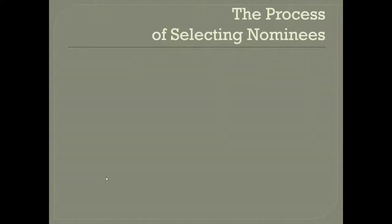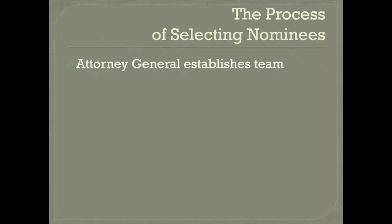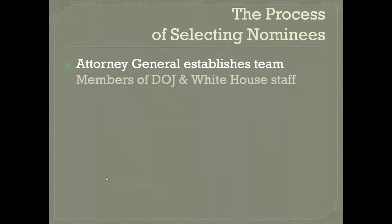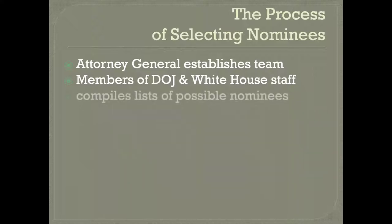We've already talked about the factors that a president considers when deciding who to nominate to the Supreme Court. Now let's consider the process that the executive branch follows before actually making a nomination. The process is typically led by the Attorney General, who establishes a team comprised of members of the Department of Justice and the White House staff. Members of the Department of Justice are there to provide legal advice, and members of the White House staff are there to provide a political perspective. Their job is to compile a list of possible nominees for the president to consider.